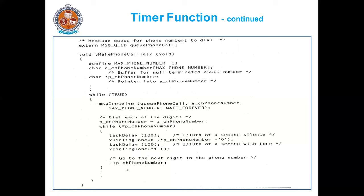After the first digit is over, the pointer is incremented to move to the next digit. Now the pointer is incremented and moves to the next digit. The process continues and repeats for the second digit, and so on for all the digits of the phone number.